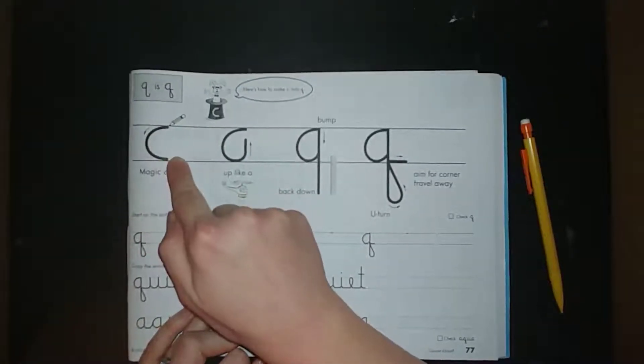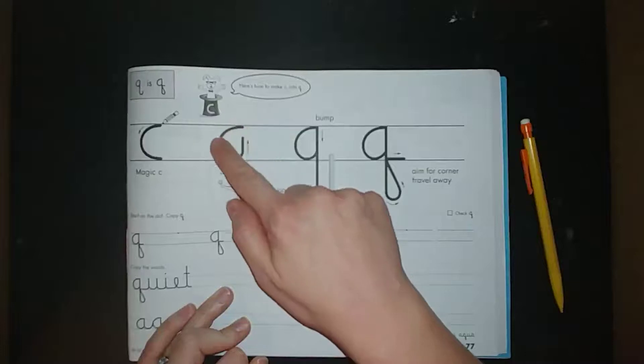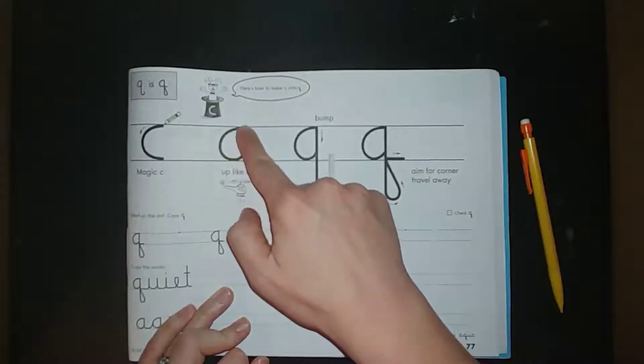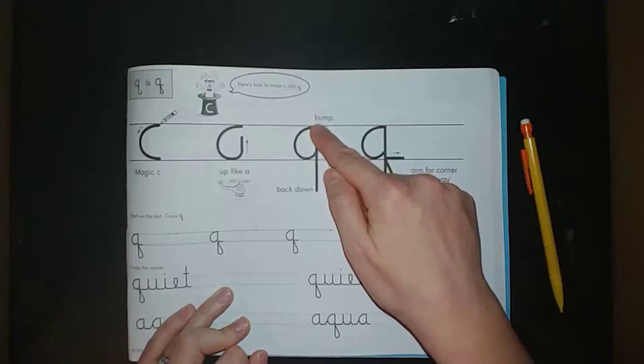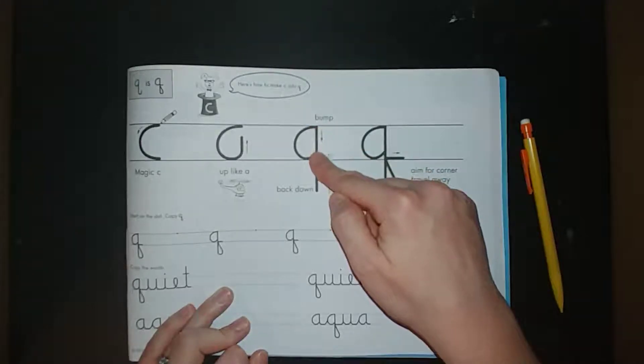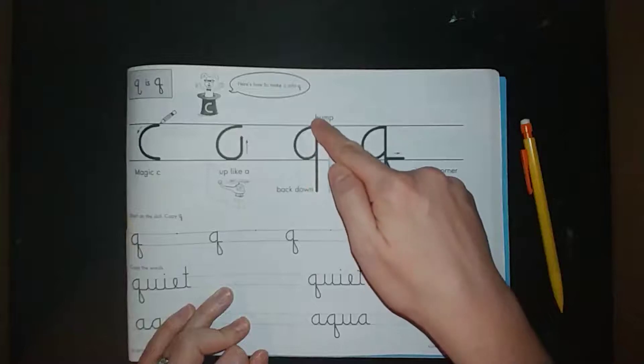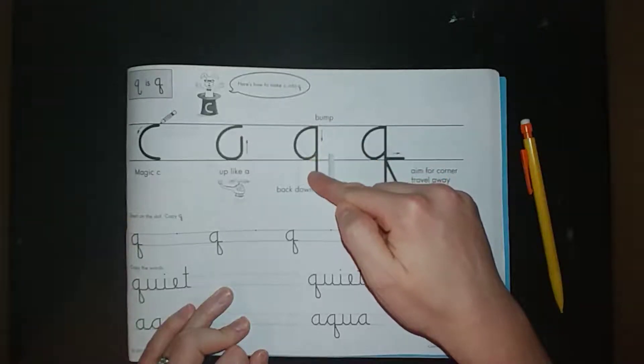So you'll make the C, then you'll go up like an A and bump it here at the middle line. Then you're going to retrace that line all the way down, and you're going to go below the line. This is one of those letters that's going to drop below.